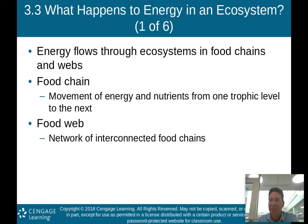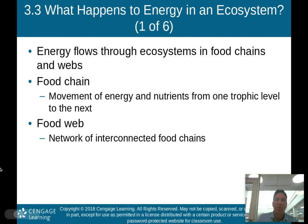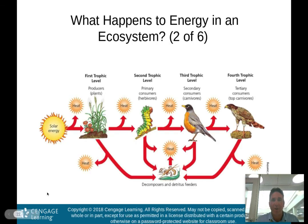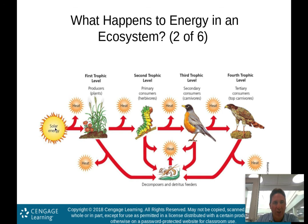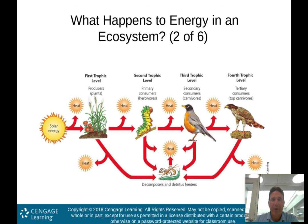Trophic levels are very important for you to know. A food web is a network of interconnected food chains. This graph shows: solar energy comes in from the sun, and everywhere you see heat listed, that is waste — low-quality energy — and we'll discuss what that means when I show you the trophic level pyramid.